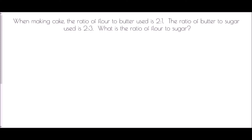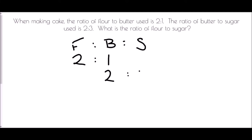So in this case, when making a cake, the ratio of flour to butter used is 2 to 1. The ratio of butter to sugar used is 2 to 3. What is the ratio of flour to sugar? What I want to do is take the three different items we've got — flour, butter and sugar — and combine that into a three-way ratio. The first thing we're told is that the ratio of flour to butter is 2 to 1, and then the ratio of butter to sugar is 2 to 3. These are separate ratios currently.